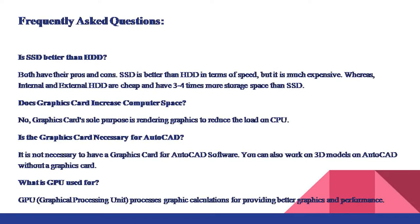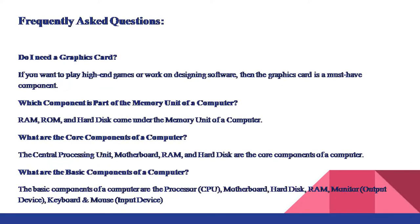What is GPU used for? GPU, graphical processing unit, processes graphic calculations for providing better graphics and performance. Do I need a graphics card? If you want to play high-end games or work on designing software, then the graphics card is a must-have component. Which component is part of the memory unit of a computer? RAM, ROM, and hard disk come under the memory unit of a computer.